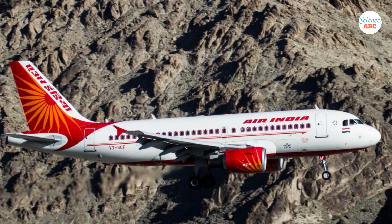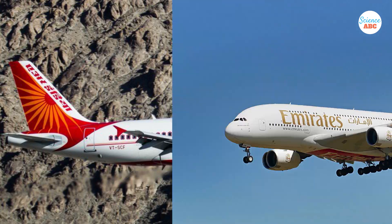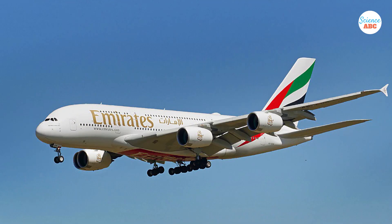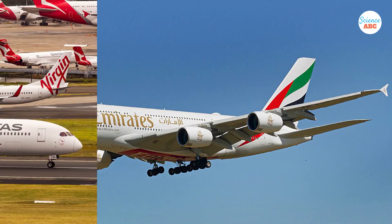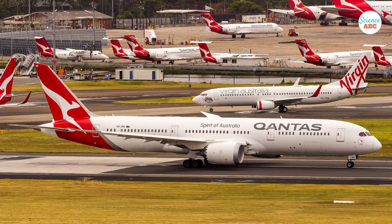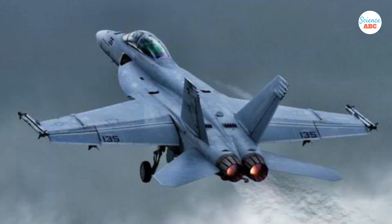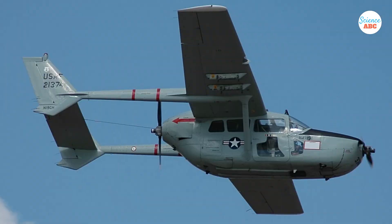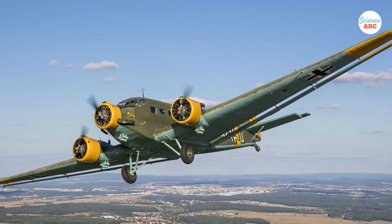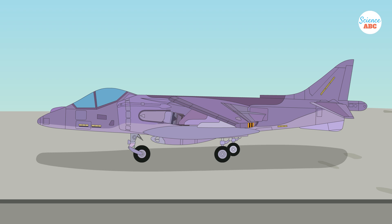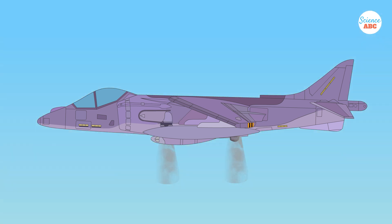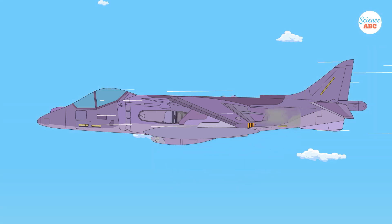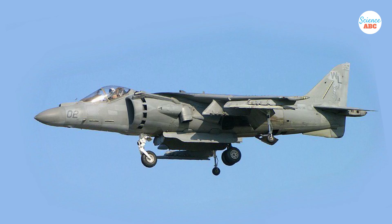Commercial planes typically have their engines located under the wings, parallel to the body. Some aircraft, particularly military jets, have engines positioned in a way that allows for adjustments to change the direction of thrust. A prime example of this is the Harrier.